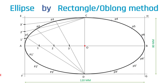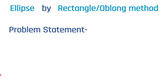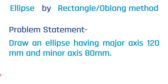Hello friends. In this video we will see how to draw an ellipse by rectangle method, which is also known as the oblong method. So let's see the problem statement first: draw an ellipse having a major axis of 120 mm and a minor axis of 80 mm. With the help of these two dimensions, we can draw an ellipse by rectangle method.